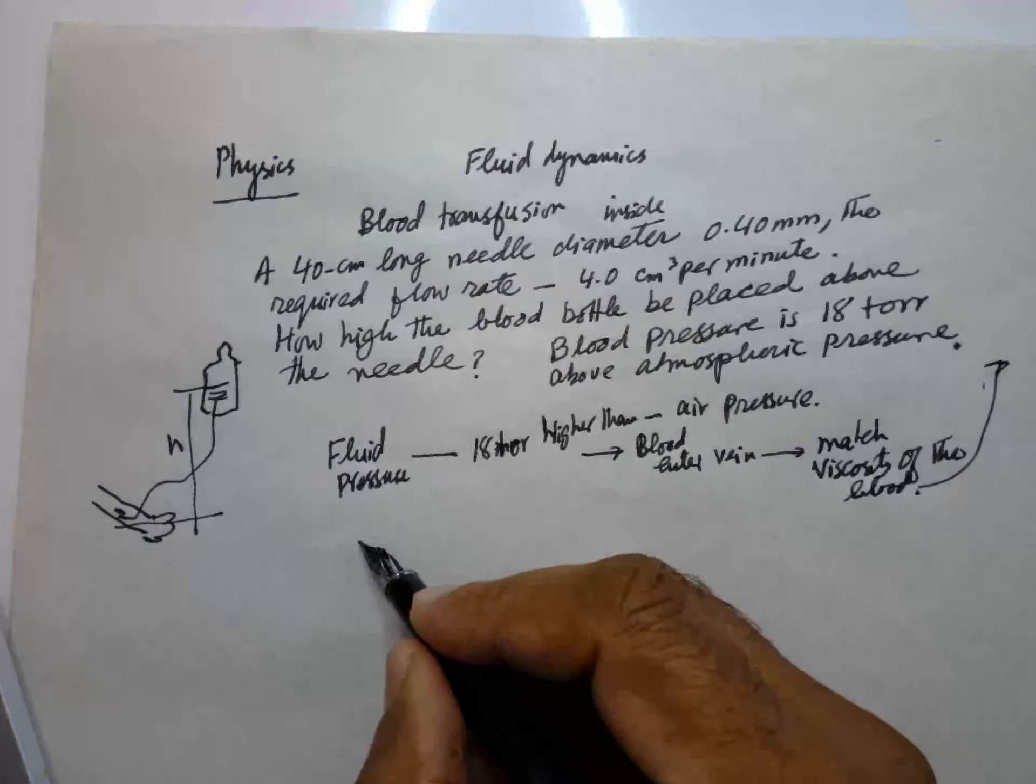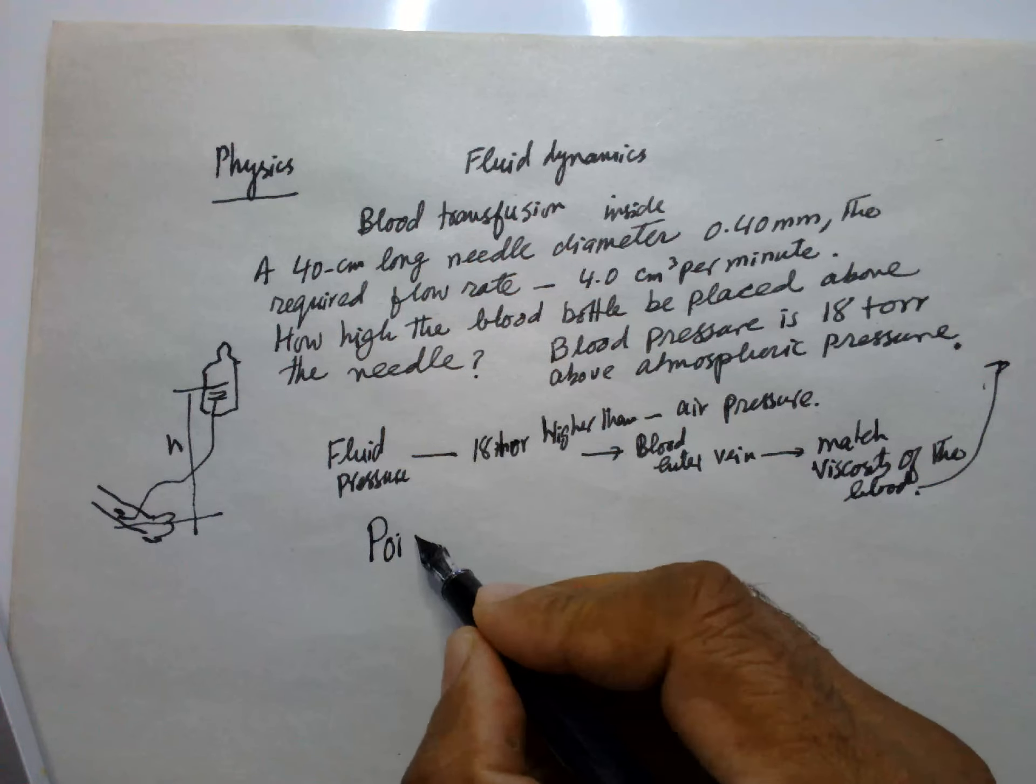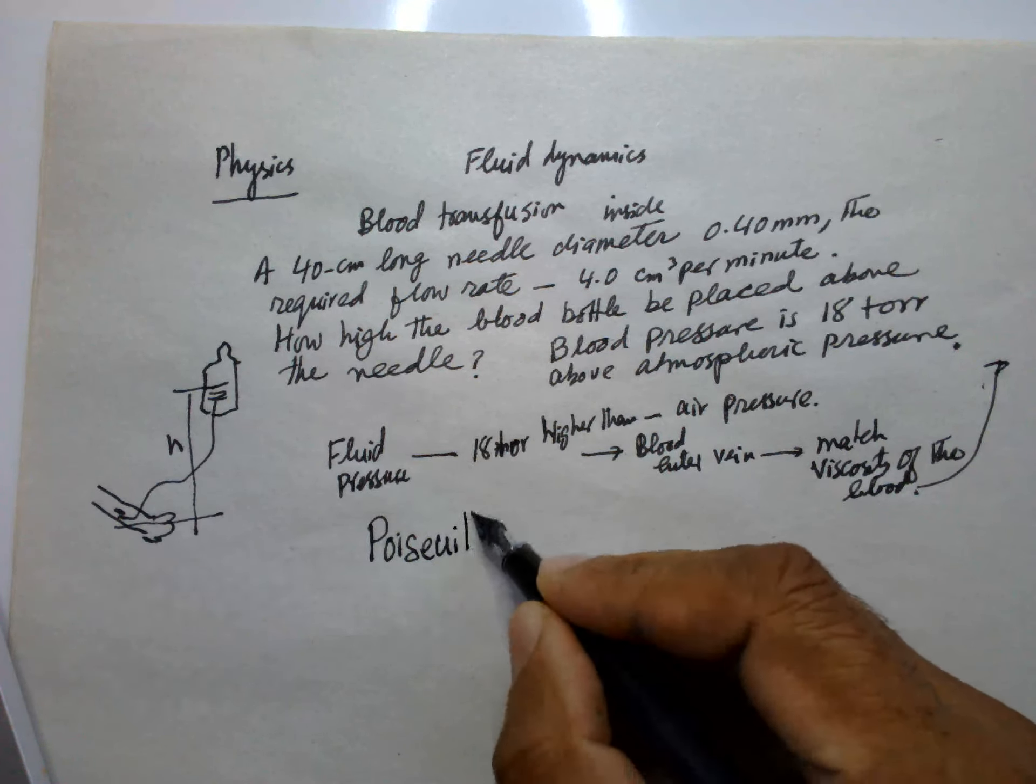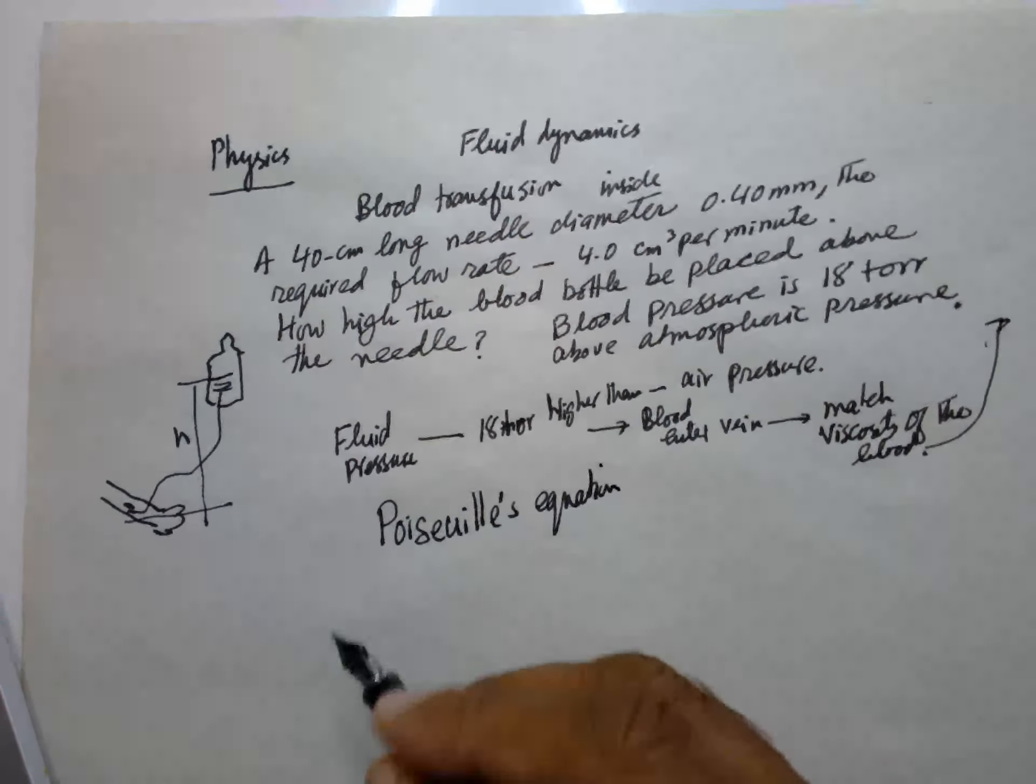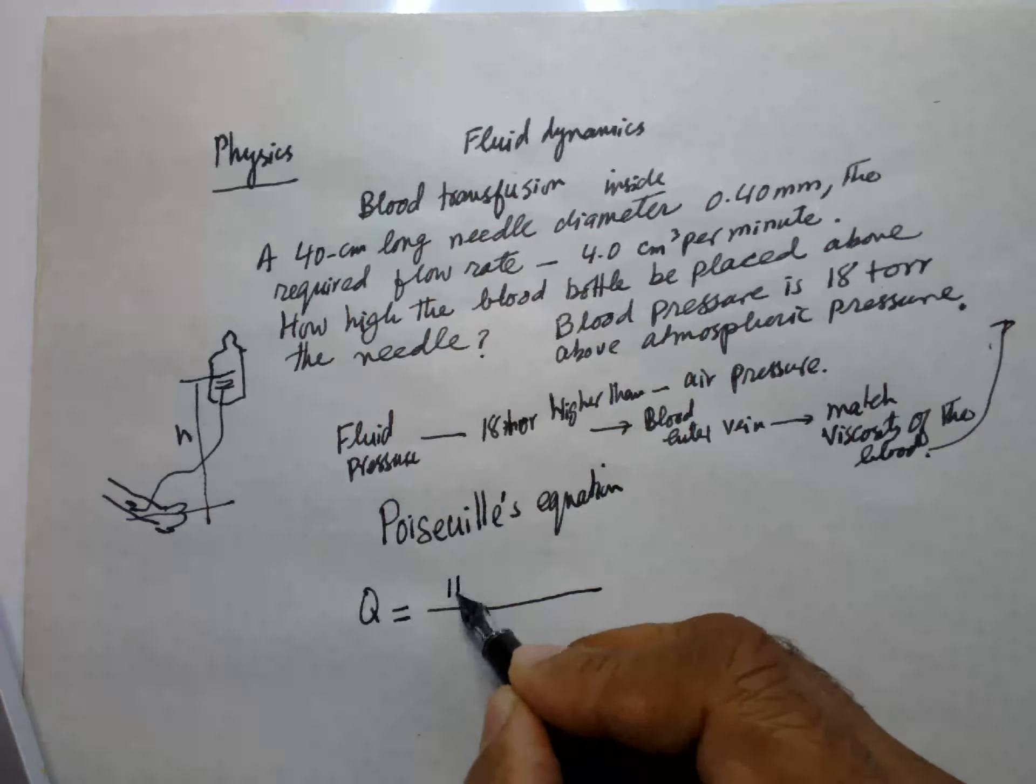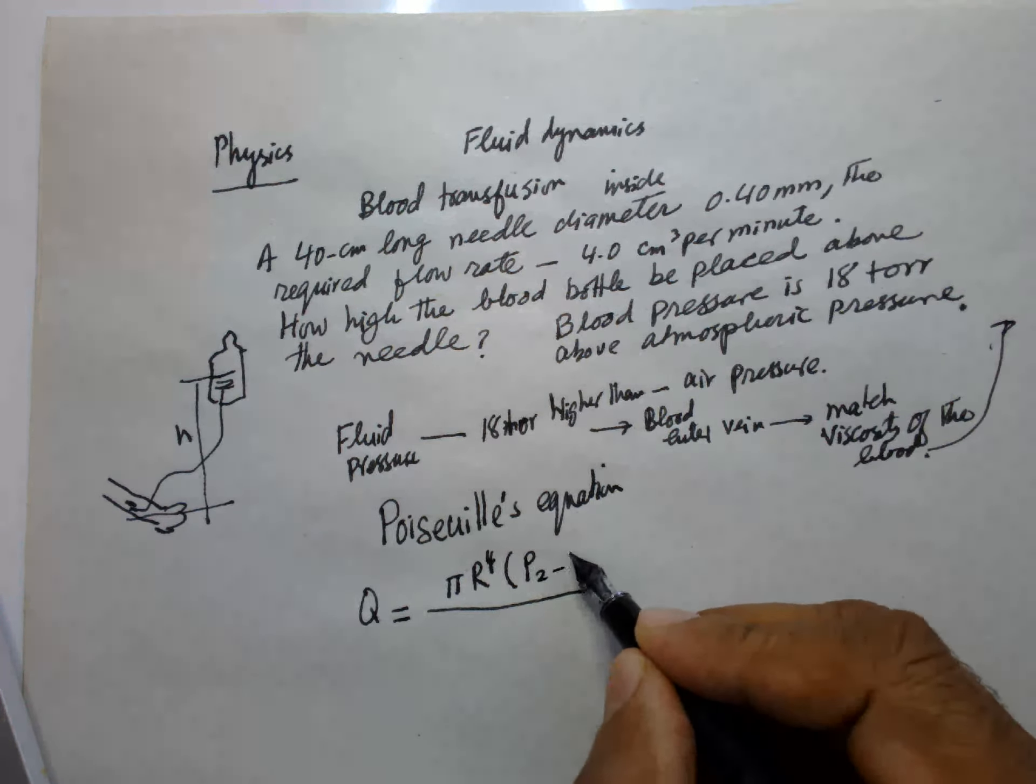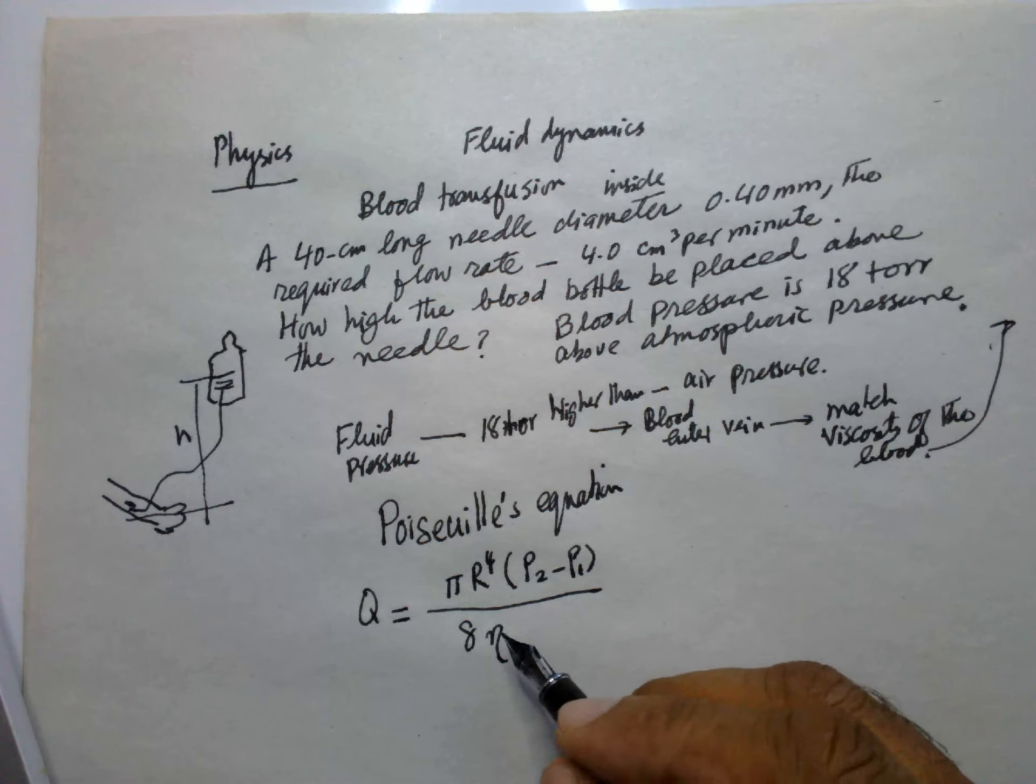So we will use the equation of Poiseuille. The rate of flow Q is equal to π r⁴ times (P₂ - P₁) divided by 8η times the length L.